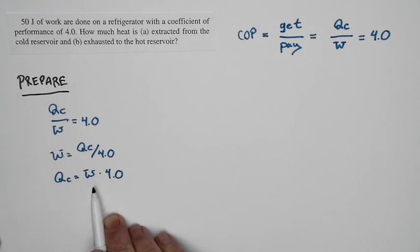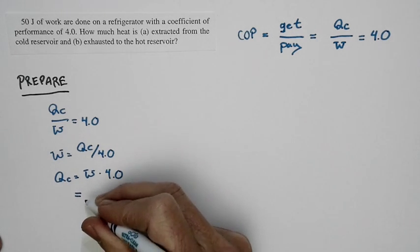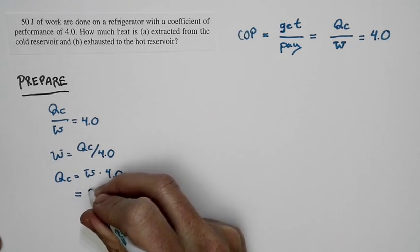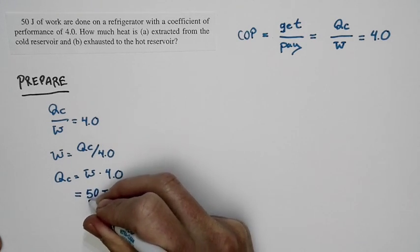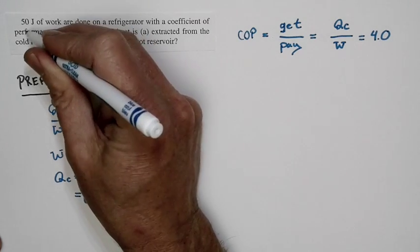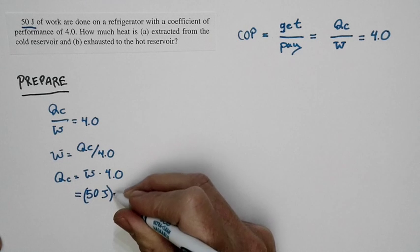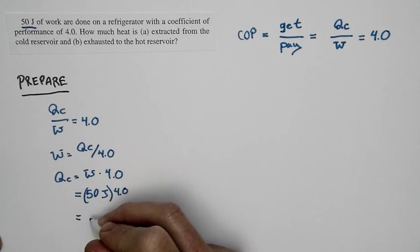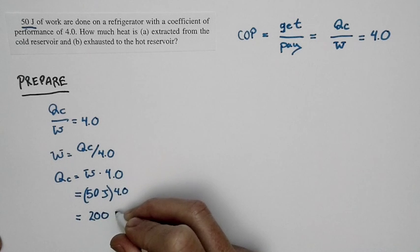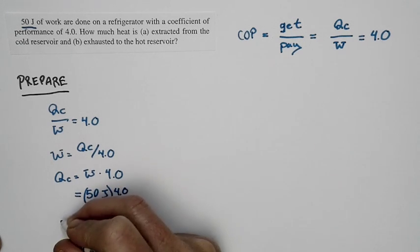Basically, if I do a certain amount of work, I can pump four times as much heat. So, the amount of energy that I pump out of the cold reservoir is the amount of work that's done, which is 50 joules. There's 50 joules of work done times 4.0. The amount of energy I pump out of the cold reservoir is 200 joules. That's my QC.